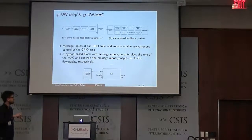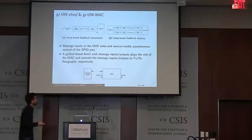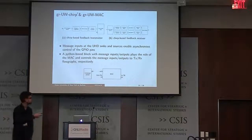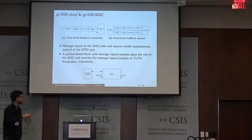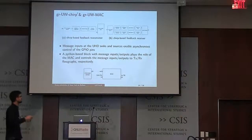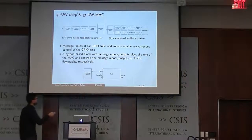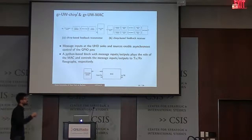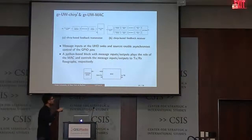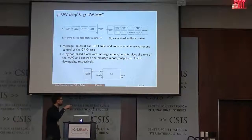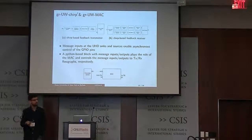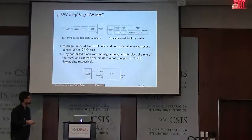All these physical layer components are controlled by messages from an upper-layer MAC, which is a Python-based state machine with message inputs and outputs that controls what data vectors are transmitted and takes adaptation decisions for the transmitter and receiver.